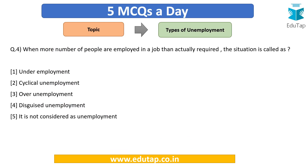Question four: when more number of people are employed in a job than actually required, the situation is called as — is it underemployment, cyclical unemployment, over unemployment, disguised unemployment, or not considered unemployment at all? The answer is disguised unemployment.